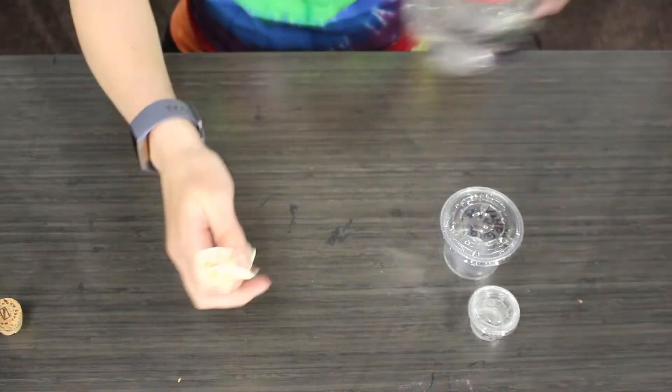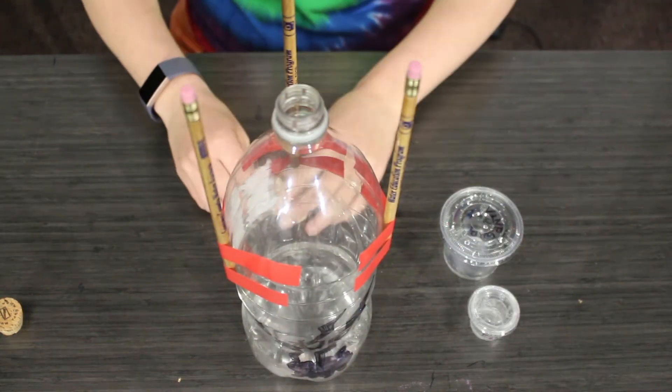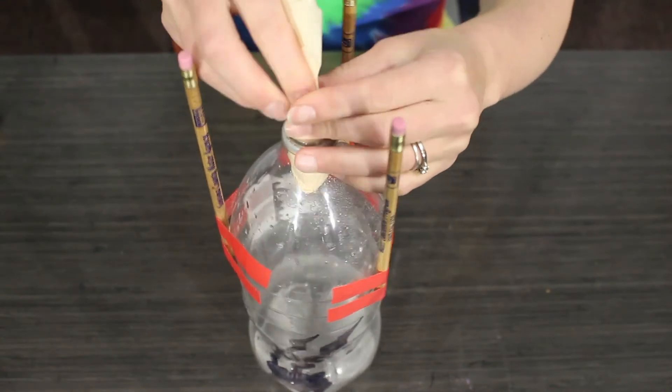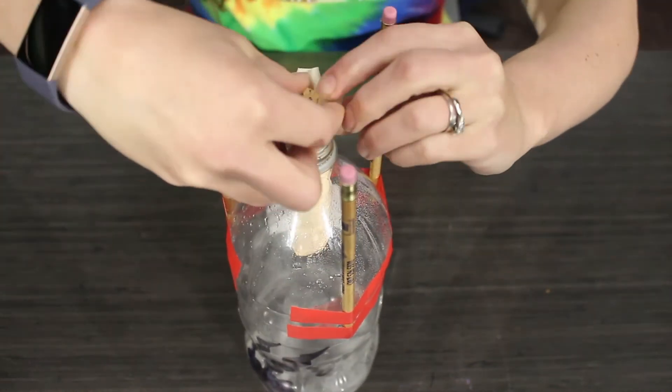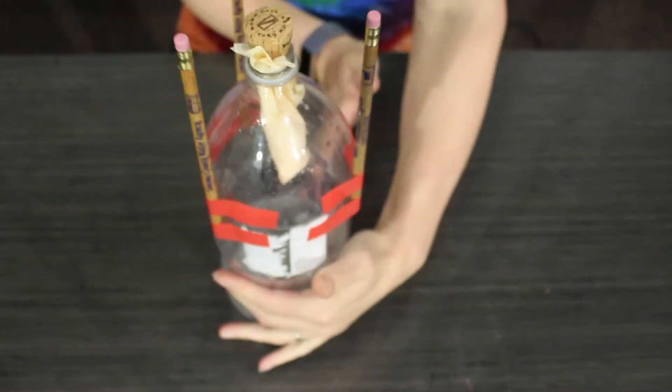Fold the paper towel up so the baking soda does not fall out, but it can still fit inside your bottle. Drop the paper towel into the rocket, leaving a small piece of the paper towel sticking out.